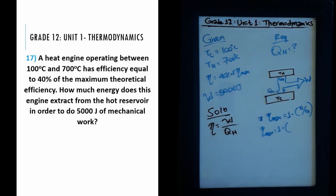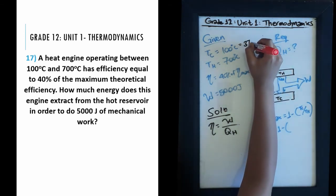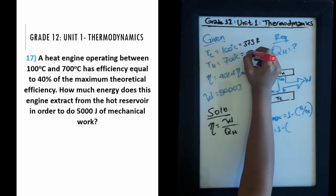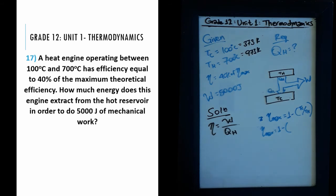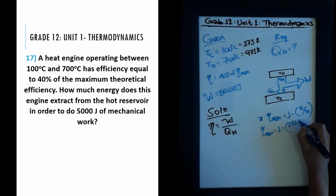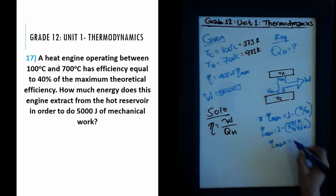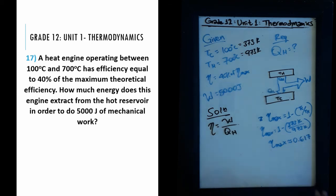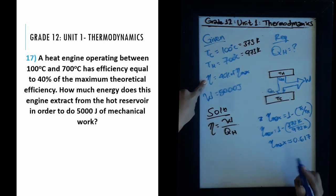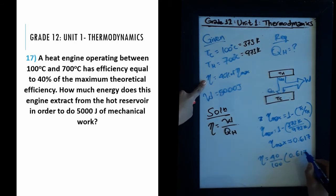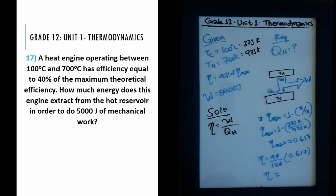We need to convert to Kelvin: 100°C equals 373 K and 700°C equals 973 K. So the maximum efficiency equals 1 minus 373 divided by 973. Doing the math, we find that the maximum efficiency is approximately equal to 0.617. But again, this is not the efficiency we're looking for — we need the actual efficiency, which is 40% of that. So the actual efficiency equals 40% of 0.617, which is approximately 0.247.